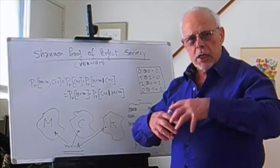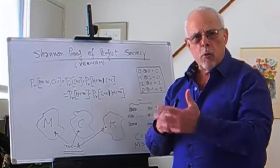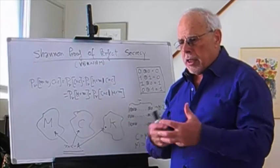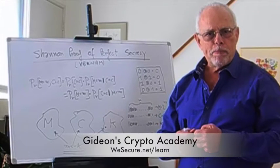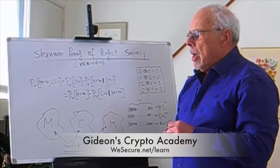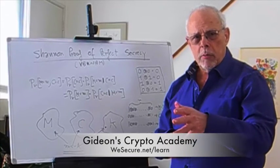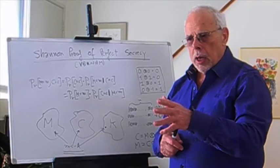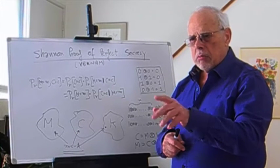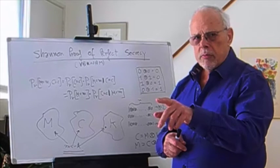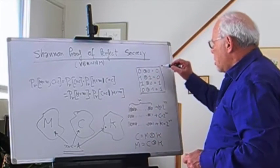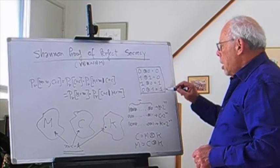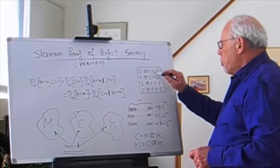Here comes Vernam and says simplicity is the answer. He takes this simple table that says if you mix zero with zero you get zero, one with one you get zero, one with zero you get one, and zero with one you get one.